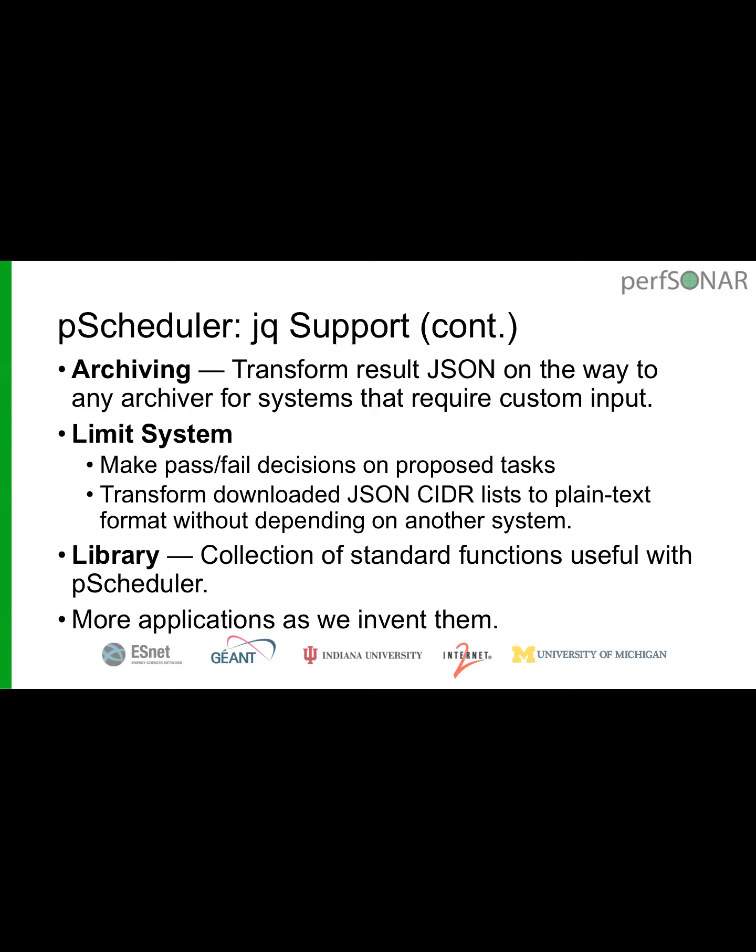One idea under consideration — feedback welcome — is task rewriting similar to Apache's URL rewriting. As tasks come in, you could modify them on the fly based on decision-making: for example, if a task requests 8 gigabits bandwidth and you want to limit it to 5, or route specific test types to specific interfaces. More to come on that.